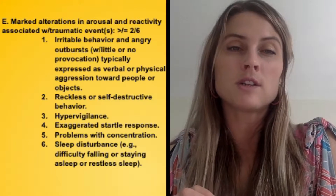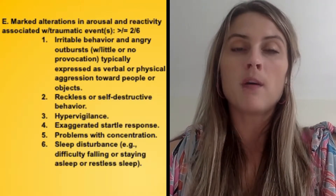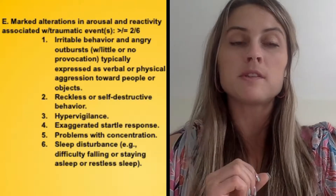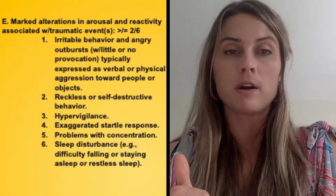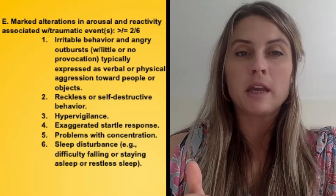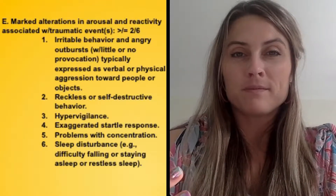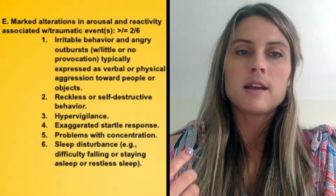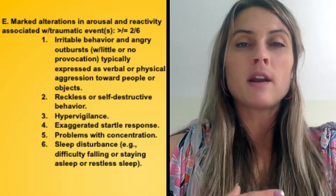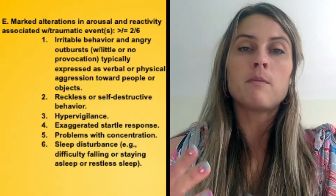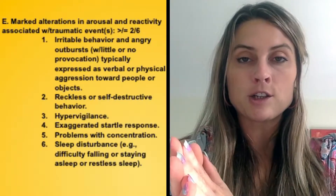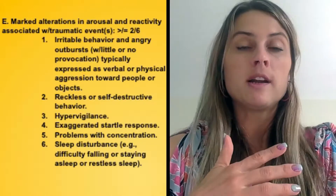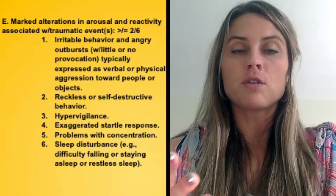Criterion E is marked alterations in arousal and reactivity associated with the traumatic event, requiring two of six. The first is irritable behavior or angry outbursts — maybe you react so strongly to little or no provocation that it surprises people around you, expressed verbally or physically. Males more commonly express physical aggression; females more verbally due to culture, though it can be either. The second is reckless or self-destructive behavior — crashing cars, substance abuse, sexual promiscuity, spending tons of money — not caring about yourself and taking risks that could put your life in danger.